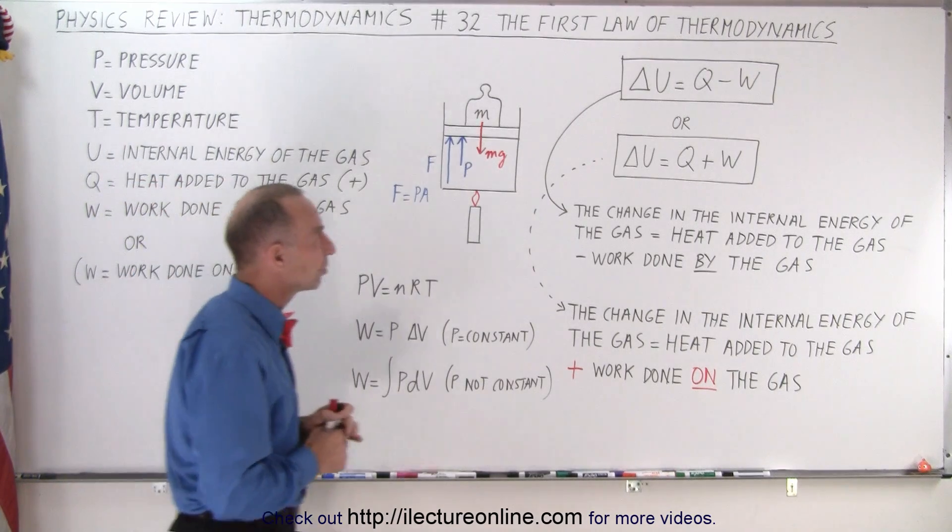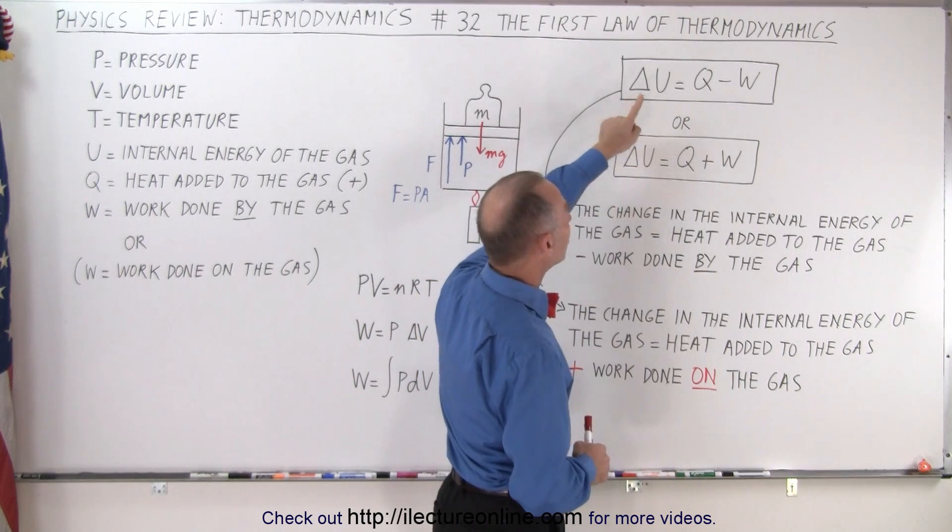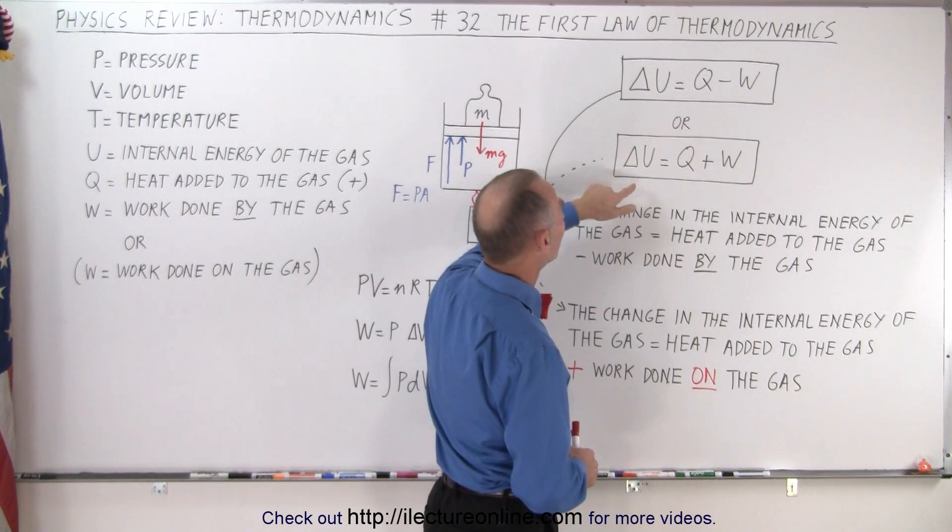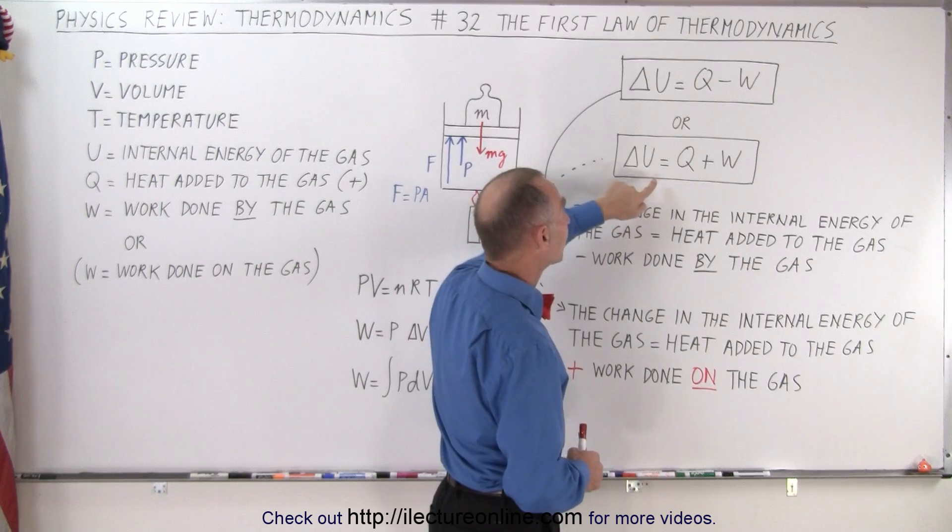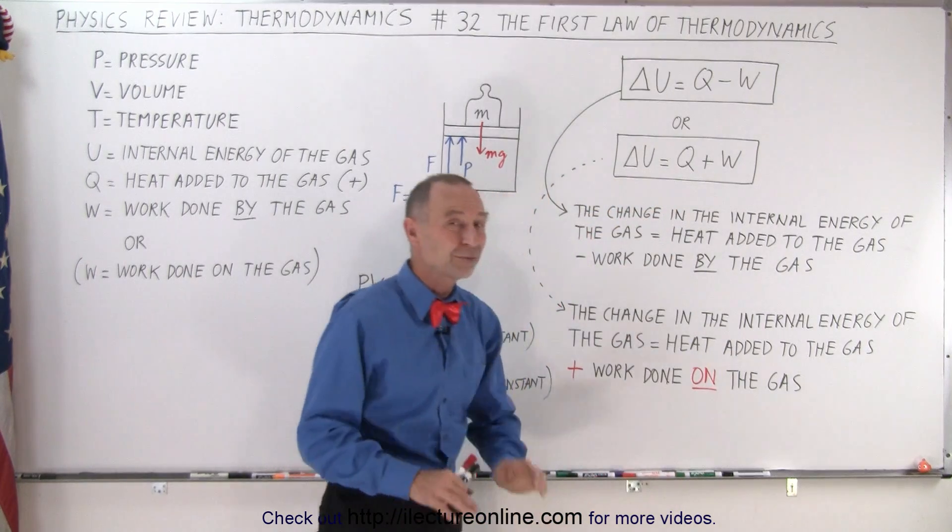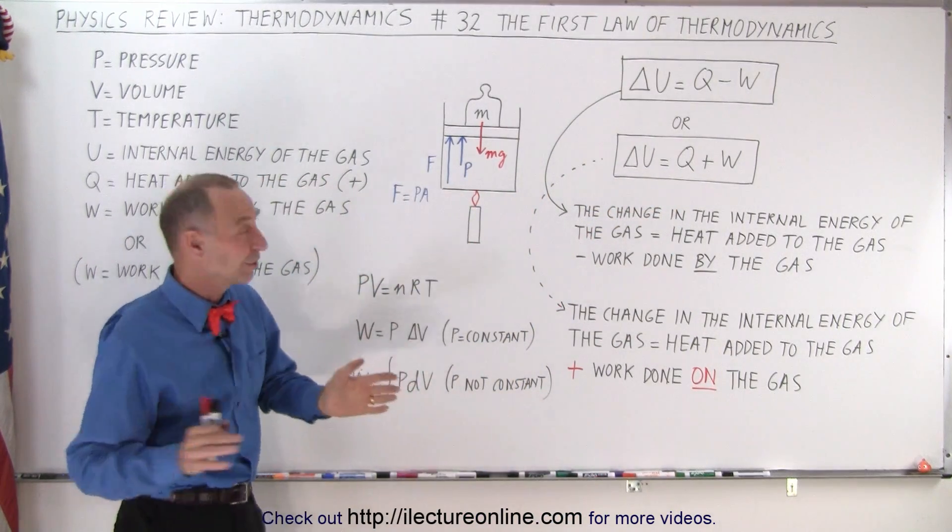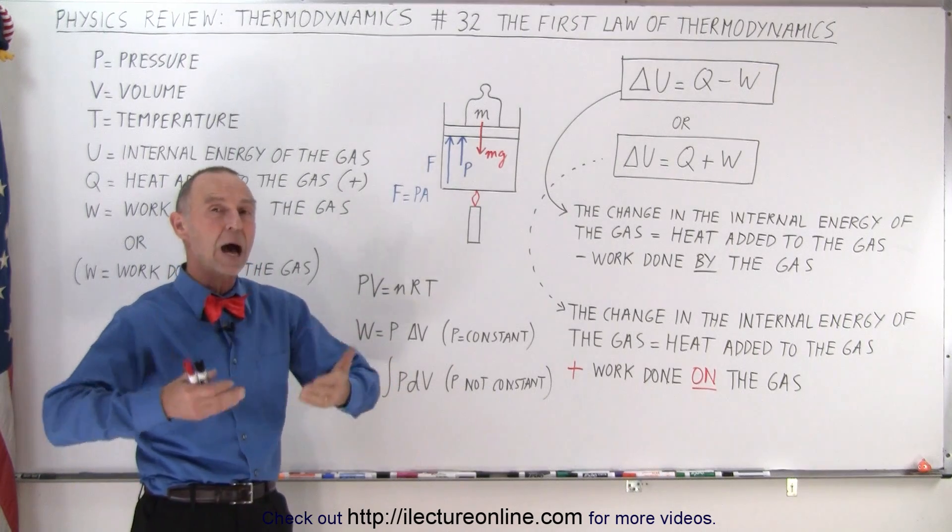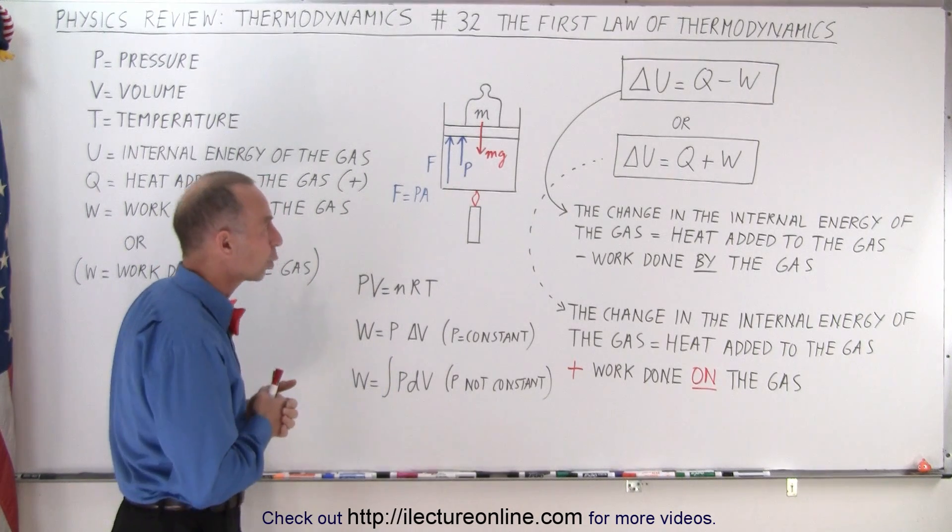Here we have the two forms of the equation. It says ΔU = Q - W or you'll find ΔU = Q + W, and it's purely a matter of preference. They're both correct depending upon how we interpret that equation.